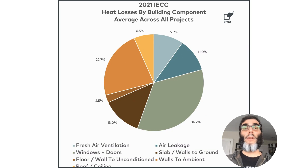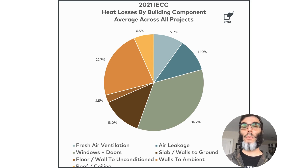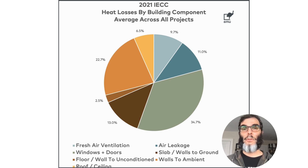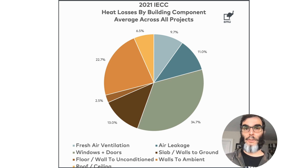What we actually found in our research is that heat losses through the ground to the outside are some of the major causes of heat loss in American homes, and that is often overlooked by professionals.